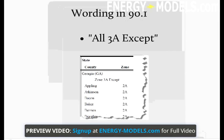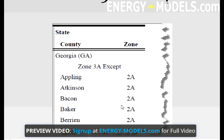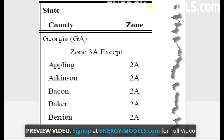It's important to consider the wording, which is often listed as, in this example, Zone 3A except. This means that if the county is not listed, it is Zone 3A. However, if the county is listed, the corresponding climate zone will be listed alongside it.